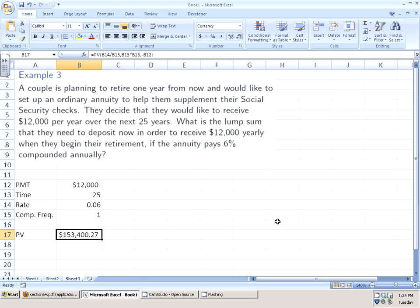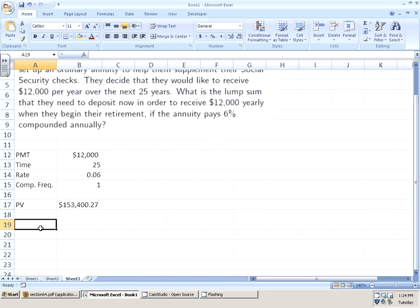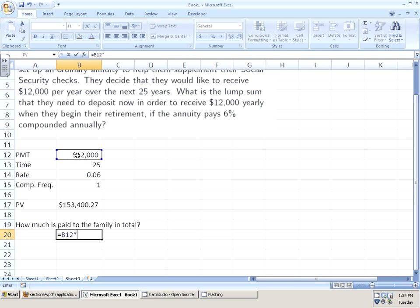Now, one neat thing to think about is how much is paid out total. Let's go back for a second. How much is paid to the family in total? Well, each year they get $12,000, but they do this for 25 years. They get $300,000 out of $153,400 worth of investment. That's a pretty good deal.